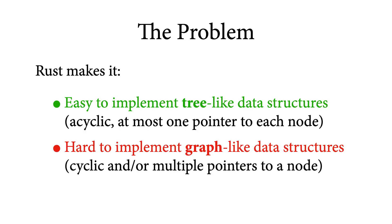Let me get straight to the problem. The problem we are tackling in this paper is that although Rust makes it easy to implement tree-like data structures — that is, data structures that are acyclic and where each node has at most one other node pointing to it — Rust makes it hard to implement graph-like data structures, that is, data structures that may contain cycles or where some nodes may have multiple pointers pointing to them. In the rest of this talk, I'm going to explain why this is the case and what we can do about it.